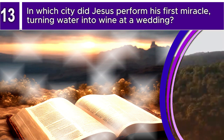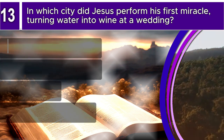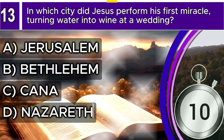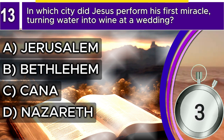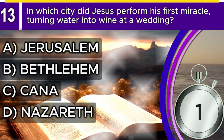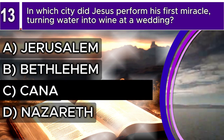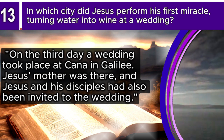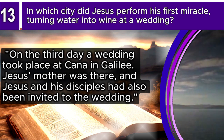Question 13. In which city did Jesus perform His first miracle, turning water into wine at a wedding? A. Jerusalem, B. Bethlehem, C. Cana, D. Nazareth. The correct answer is C. Cana. John 2, verses 1–2 says: On the third day a wedding took place at Cana in Galilee. Jesus' mother was there, and Jesus and His disciples had also been invited to the wedding.